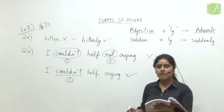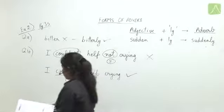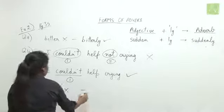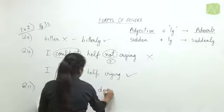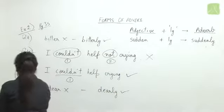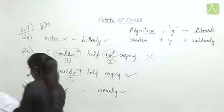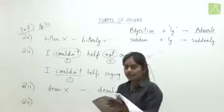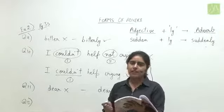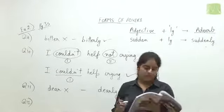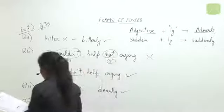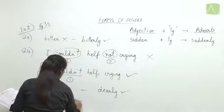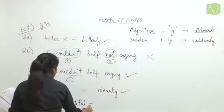Question twelve: 'She is too beautiful.' Instead of 'too,' we should use 'very' because 'beautiful' is a positive degree adjective, and with positive degree adjectives we use 'very,' not 'too.' So 'too beautiful' is wrong; 'very beautiful' is correct. Question thirteen: 'I haven't got no money.' 'Haven't' and 'no money' create double negatives, which is wrong.